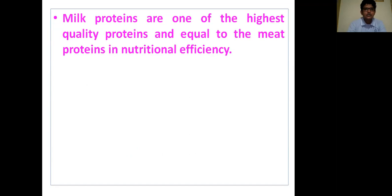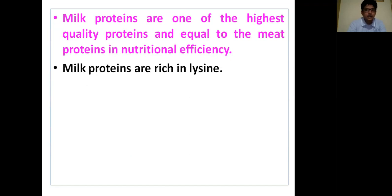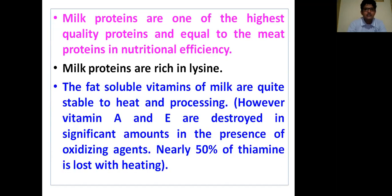Milk proteins are one of the highest quality proteins and equal to meat protein in nutritional efficiency. Milk proteins are rich in lysine. The fat-soluble vitamins of milk are quite stable to heat and processing. However, vitamins A and E are destroyed in significant amounts in the presence of oxidizing agents. Nearly 50% of thiamine is lost with heating.